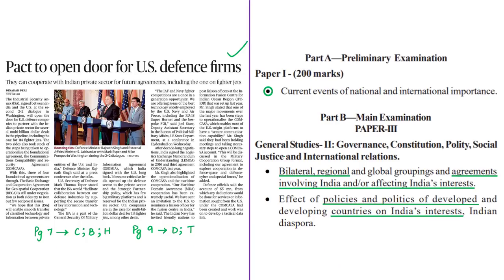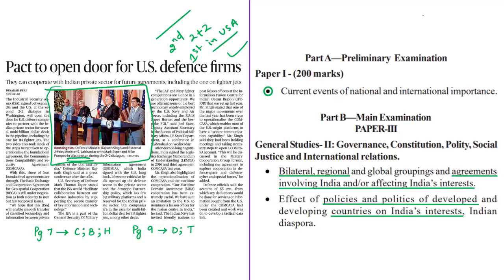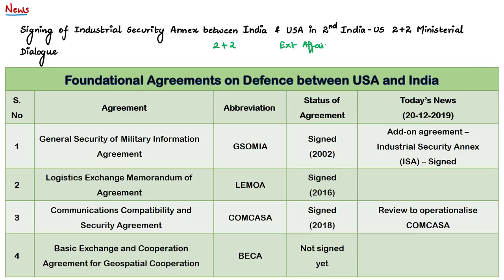This news article talks about various developments that happened in the second India-United States 2+2 ministerial dialogue, held at Washington, United States, on 18th December 2019. This is the second 2+2 meeting between India and United States, and the first to be held in the United States. According to the Government of India, this 2+2 dialogue is the highest-level institutional mechanism between the two countries, providing for a review of security partnership, defense partnership, and strategic partnership.